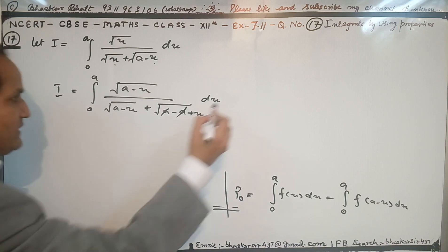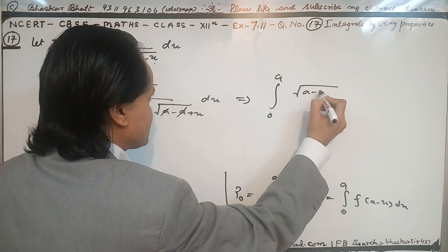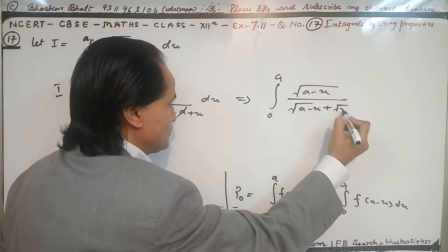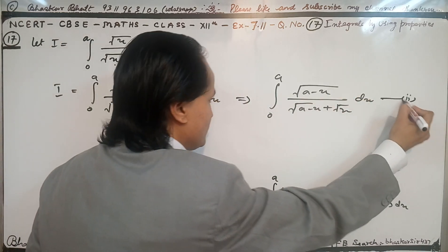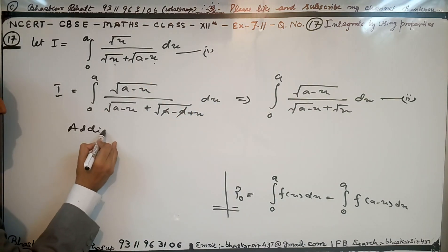Now what we have is I equal to integral from 0 to a of (a minus x) upon (a minus x plus root x) with respect to dx. This is the second equation. Now, adding the first and second.